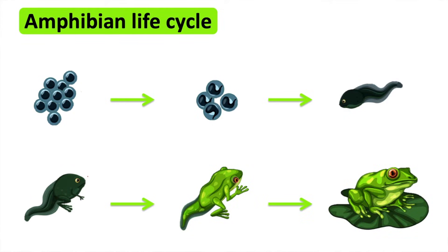For example, a frog. First an adult frog lays hundreds of tiny eggs in the water. A tadpole begins to form in the egg. After a few weeks the tadpole hatches. The tadpole does not have any legs yet.